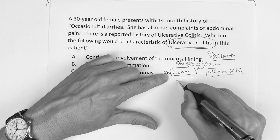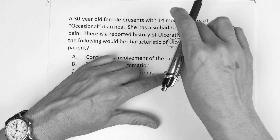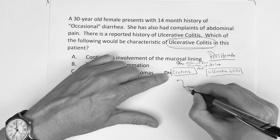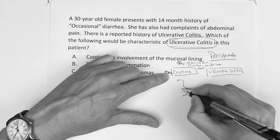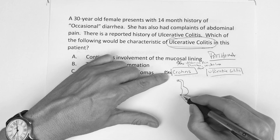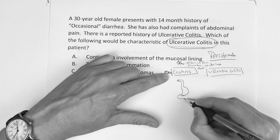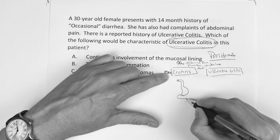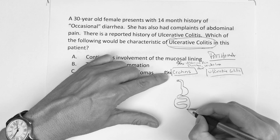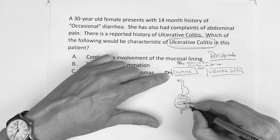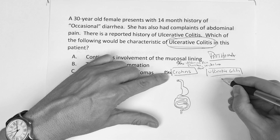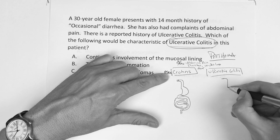If you go back to the GI videos, you can draw the esophagus, the stomach, and the intestines. So you kind of get the idea of what we're trying to accomplish here. For ulcerative colitis, I want you to do the same thing — draw it out — because you want to make sure that you can tell the story, as if you were going to teach it to the next person.